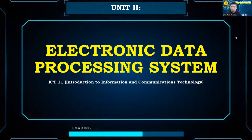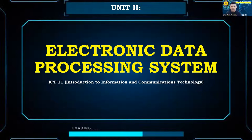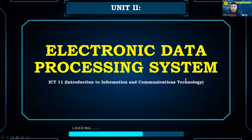Unit 2: Electronic Data Processing System. Overview: This unit gives you an idea about data processing and the data processing cycle. Stages of the data processing cycle and types of data processing will be introduced in this unit. Moreover, the electronic data processing system and its elements will be presented.